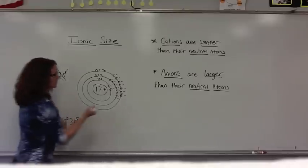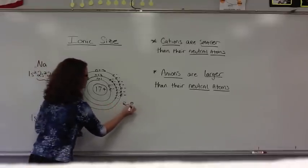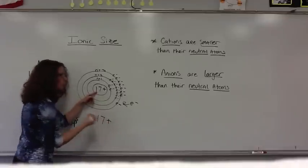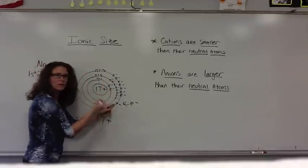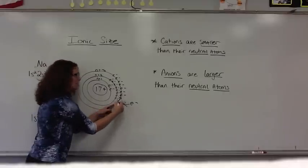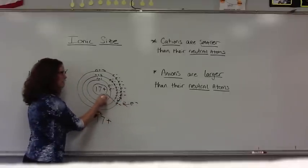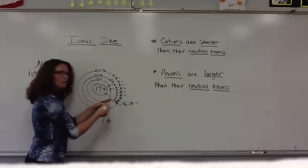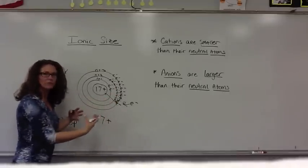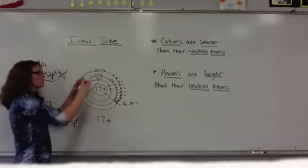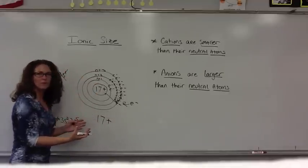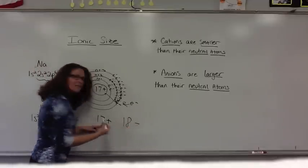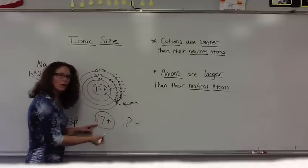If we gain an extra electron into this atom, we still only have 17 positive charges holding on to all of these electrons. This extra electron that comes in is causing more electron-electron repulsions. It is still attracted to the nucleus somewhat, however, all the core electrons are also pushing it away. So many repulsions have actually caused this electron boundary to be a little bit further away from the nucleus because it's the same number of protons, but now there's 18 negative particles that these protons are trying to hold on to.